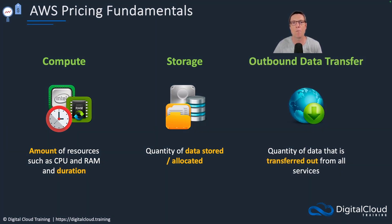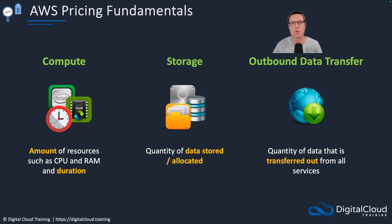The third element is outbound data transfer — the quantity of data that's transferred out of an availability zone or a region. This is something where companies can get a little bit tripped up. You never pay for data that you transfer into the cloud, but you do pay for data that's transferred out of an availability zone or a region, and those charges can amount to quite a bit of money if you're transferring large quantities of data.